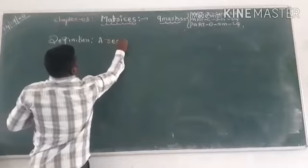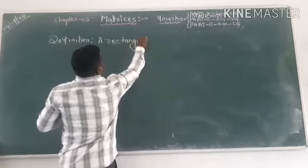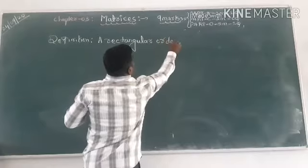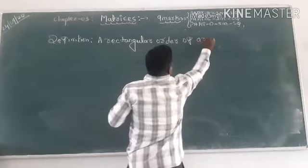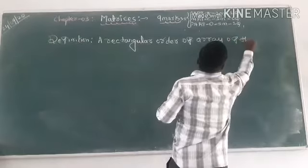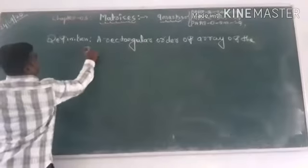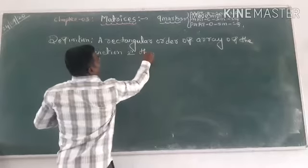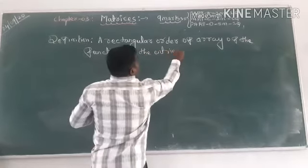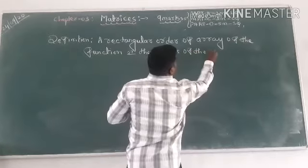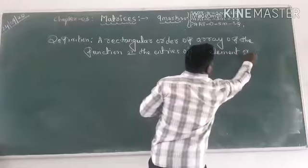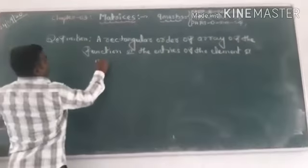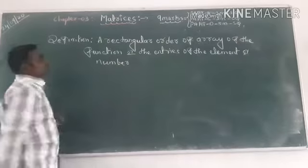Definition: A matrix is a rectangular order of array — array means elements or functions, entries of the element. Numbers or functions are known as the matrix entries. Most of the time they ask about this one mark function.